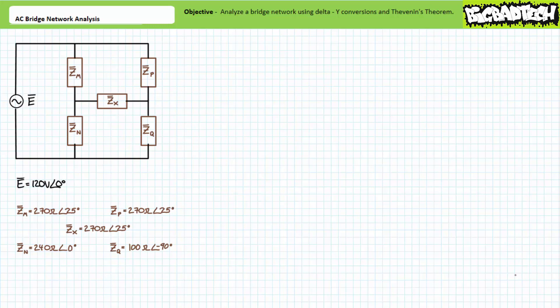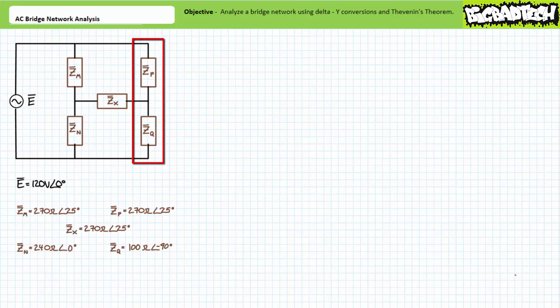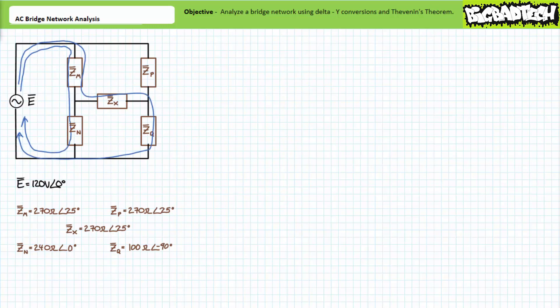The classic example of a complex circuit is a bridge network consisting of five impedance elements, where two pairs of stacked elements form the uprights of the bridge — ZM and ZN on the left and ZP and ZQ on the right — and the fifth element ZX is the decking of the bridge spanning the chasm between the two uprights. Note impedance element ZM is not purely in series with ZN in the left upright because of the influence of the bridge impedance element ZX.